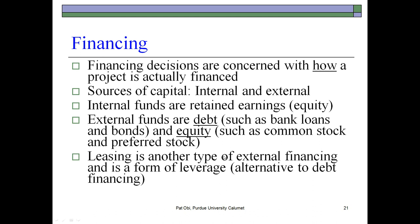Financing decisions are generally concerned with how a firm's projects are actually financed. A firm may choose to use internally generated capital, such as retained earnings, or go outside the firm to raise additional capital, which may come in the form of additional borrowed capital — debt — or additional equity in the form of common stock.